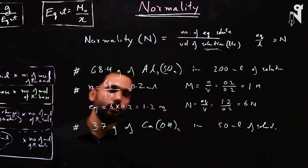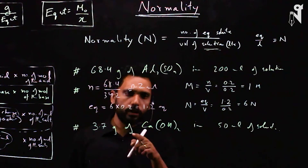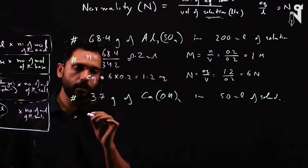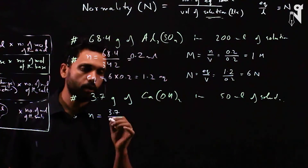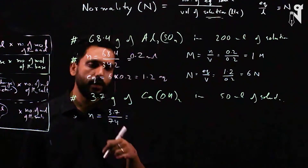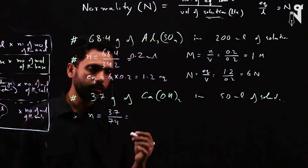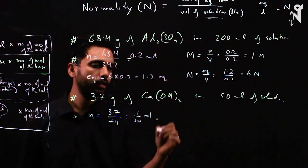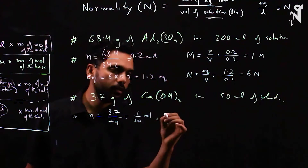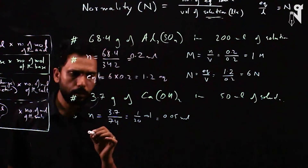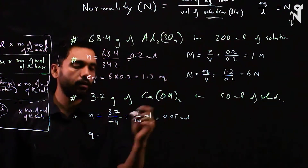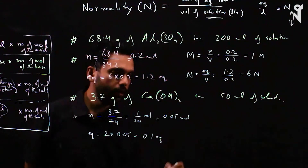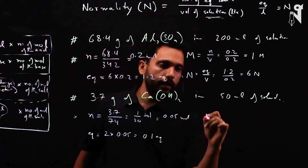Now do the calcium hydroxide problem. Number of moles = 3.7 ÷ 74 = 1/20 = 0.05 moles. Number of equivalents = X factor of Ca(OH)₂, which is 2, times 0.05 = 0.1 equivalents.